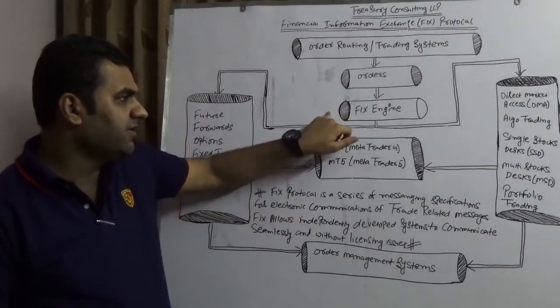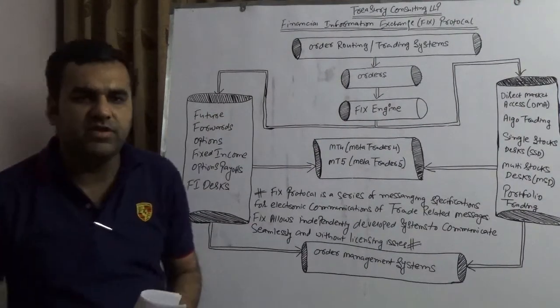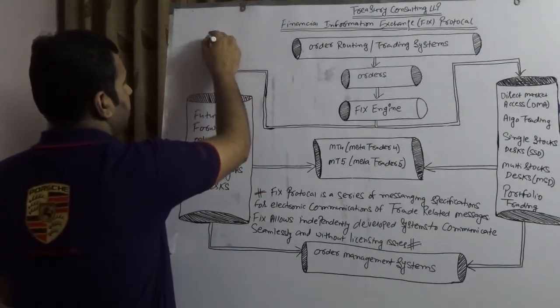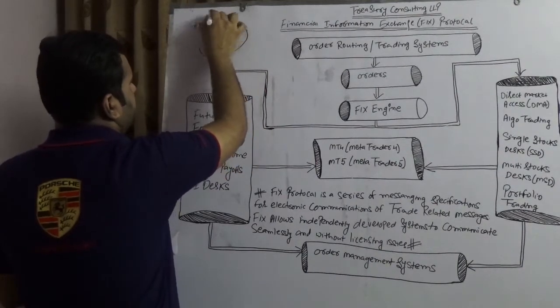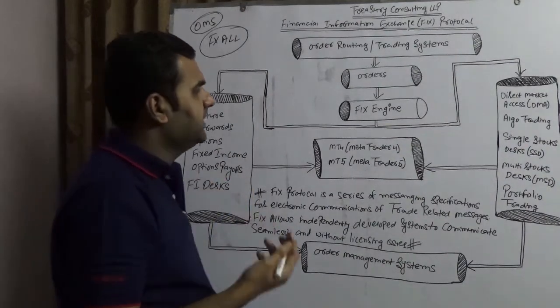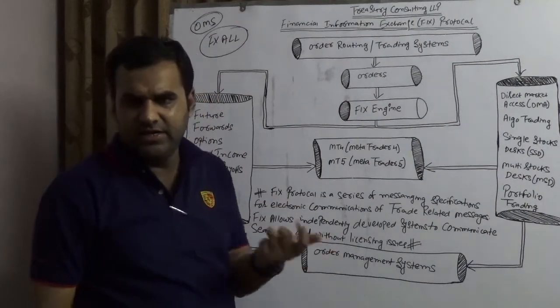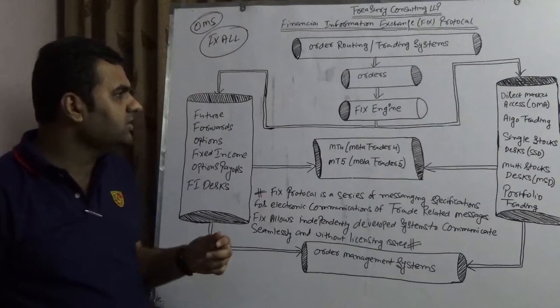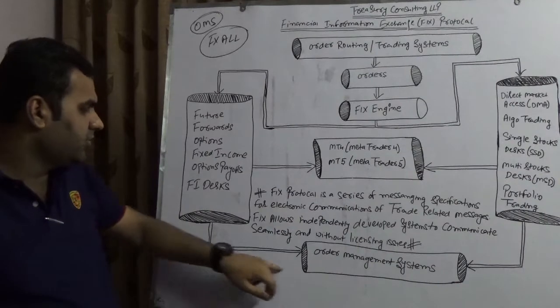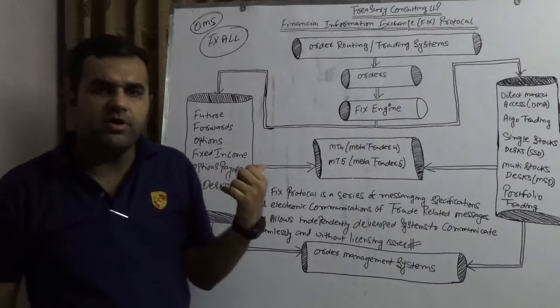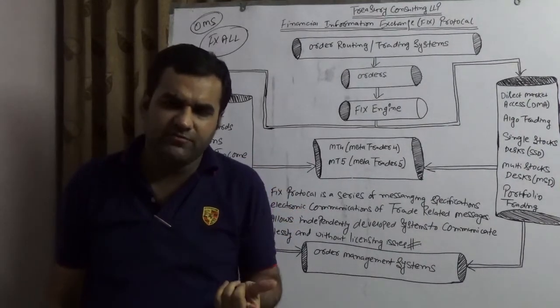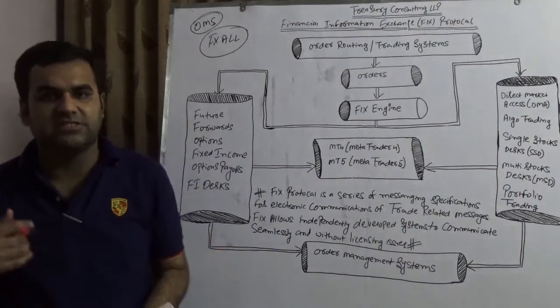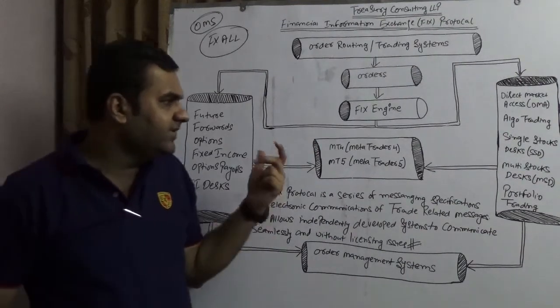This is the FIX engine which has FIX protocols, and here you have order routing and trading systems. We can also link this with OMS, which is Order Management Systems. Take an example of FX All - this is an OMS of Thomson Reuters. That OMS of Thomson Reuters would like to integrate with FIX. So what happens is that all the hedge funds, brokers, dealers, bankers, and international G7 bankers are able to get connected. They will enter into the OMS, and in this order management system they would be able to put their orders.